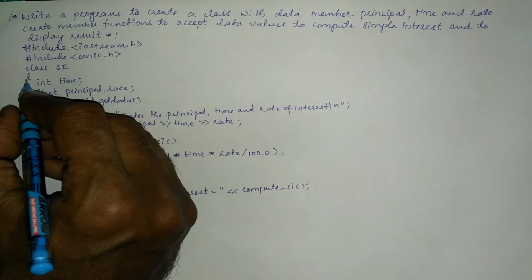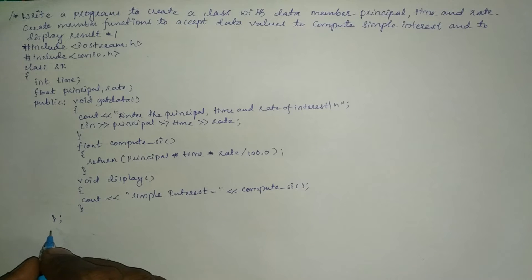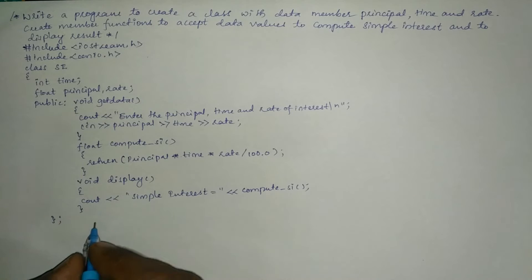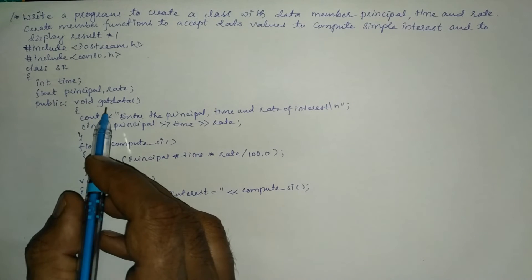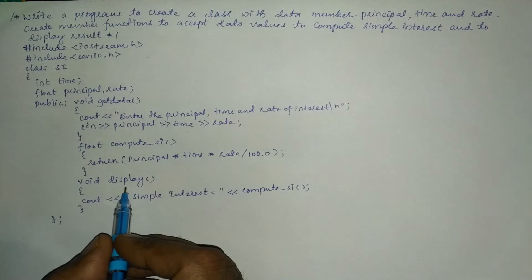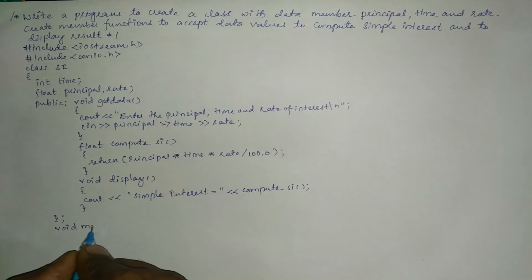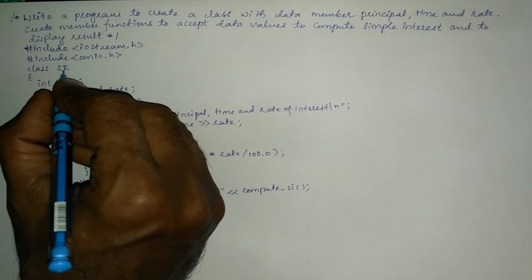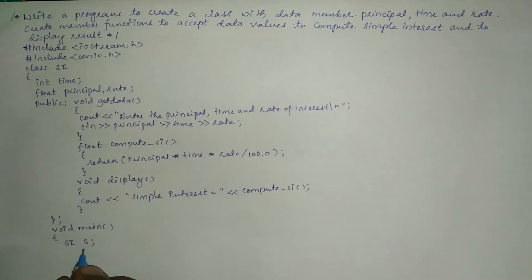Now I have to close this class definition, so I put one more closing brace and a semicolon. This indicates the termination point of the class definition. Now I have to create an object of this class type to access get_data and display. So I write the void main function with a curly open brace, declare the class name SI and create object named 'y' of this type.